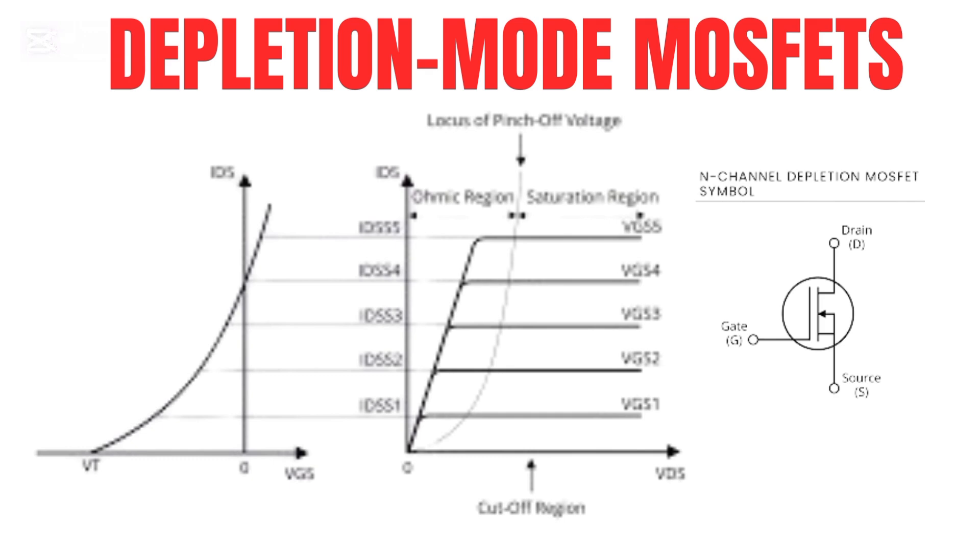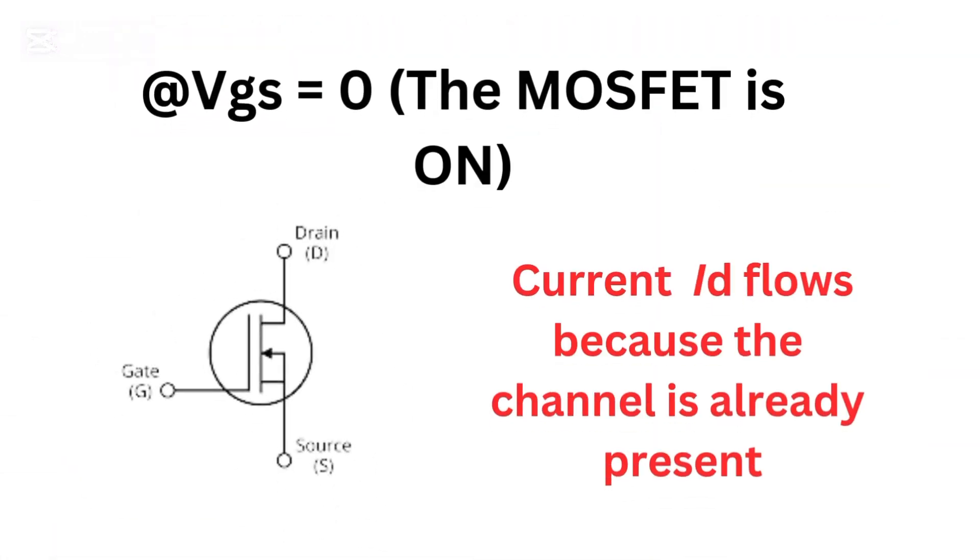Depletion mode IV characteristic. Now let's look at the depletion mode MOSFET. Here's what makes it special. At VGS equals zero, the MOSFET is on. Current flows because the channel is already present.